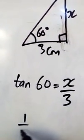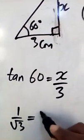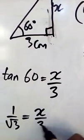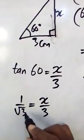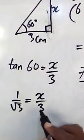Tan 60 is 1 over √3, and that's equal to x over 3 on this side.